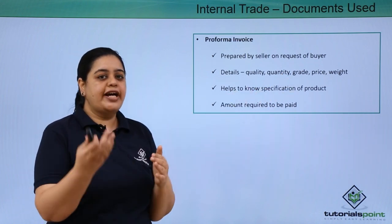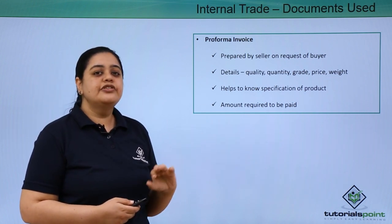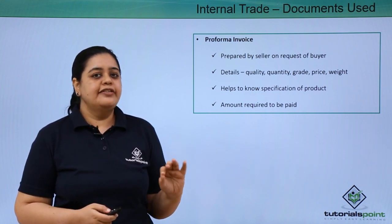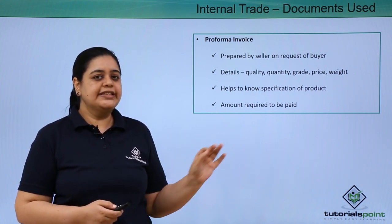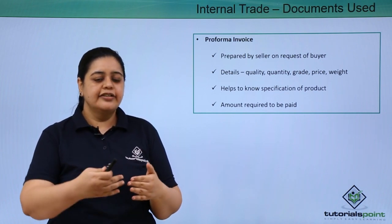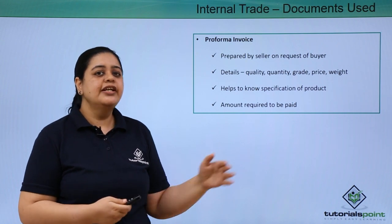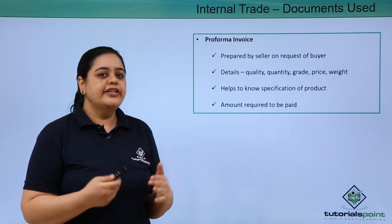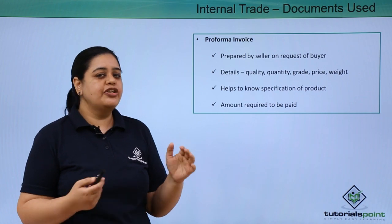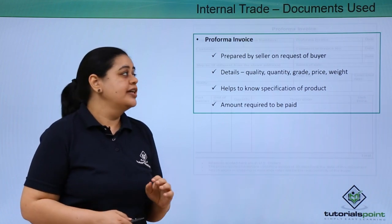It helps the buyer to know the specifications of the product and also gives information about the amount that would be required to be paid to the seller. Once the buyer and the seller agree to buy and sell the goods, the seller can send the performa invoice. This is not the final invoice — it is just an informational invoice.